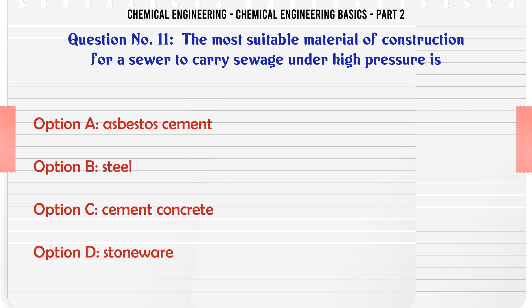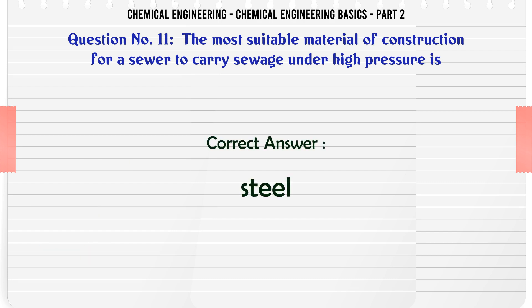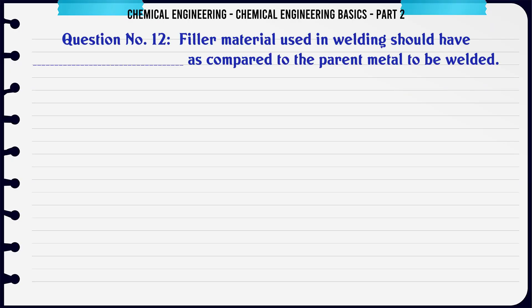The most suitable material of construction for a sewer to carry sewage under high pressure is: a) asbestos cement, b) steel, c) cement concrete, d) stoneware. The correct answer is: steel.